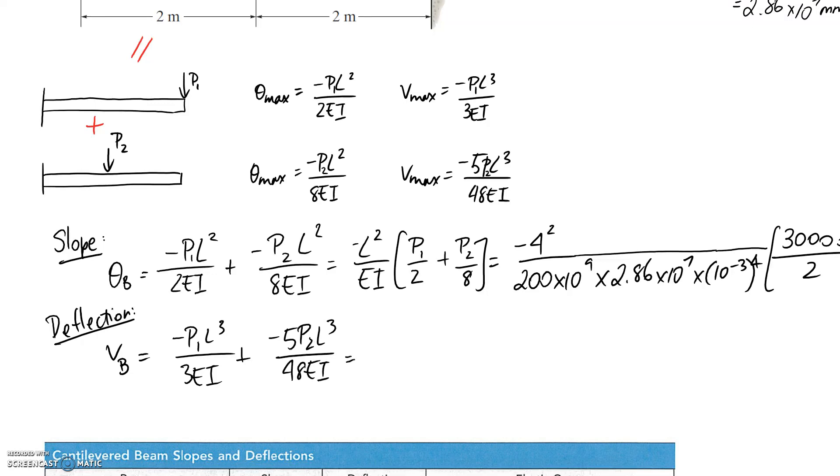I'm going to again try and factorize this to make it a little bit easier for the substitution. So I can take out L cubed and EI, so for the first term it needs to be multiplied by P1 on 3, and for the second one it's going to be 5 P2 on 48.